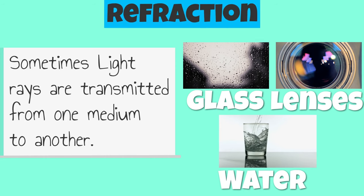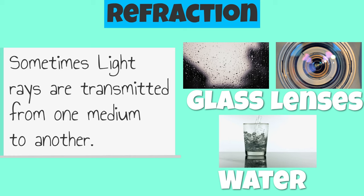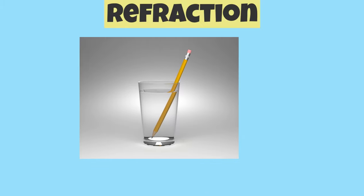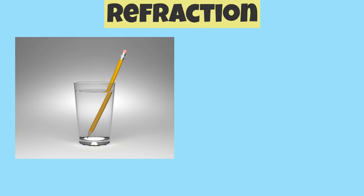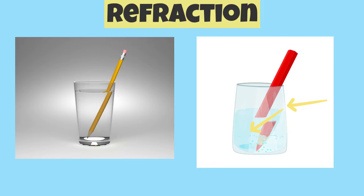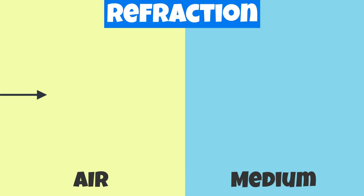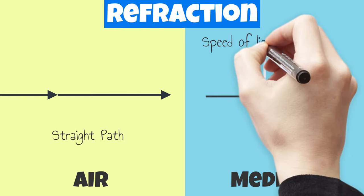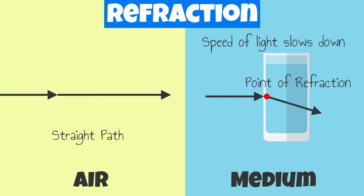When light rays are refracted, they're transmitted from one medium to another and they change direction because the speed of light changes. This causes objects to appear distorted. An example of this is when light energy is transmitted from air to water or to a glass medium. When light rays travel through air, they follow a straight path, but when they pass through water or enter a medium, their direction changes at the point of refraction because the speed of light slows down.